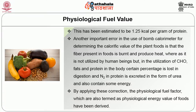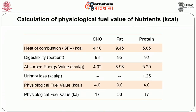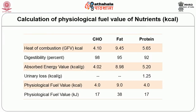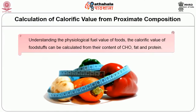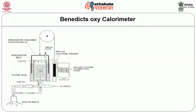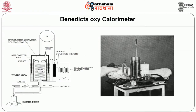By applying these corrections, the physiological fuel factors — also termed physiological energy values of food — have been derived. The calorific value of foods can be calculated from the content of carbohydrate, fat, and protein. The Benetik oxy calorimeter is another apparatus used for determination of energy value of food, devised by Benetik and his co-workers. This instrument measures the volume of oxygen required to burn a known weight of food.